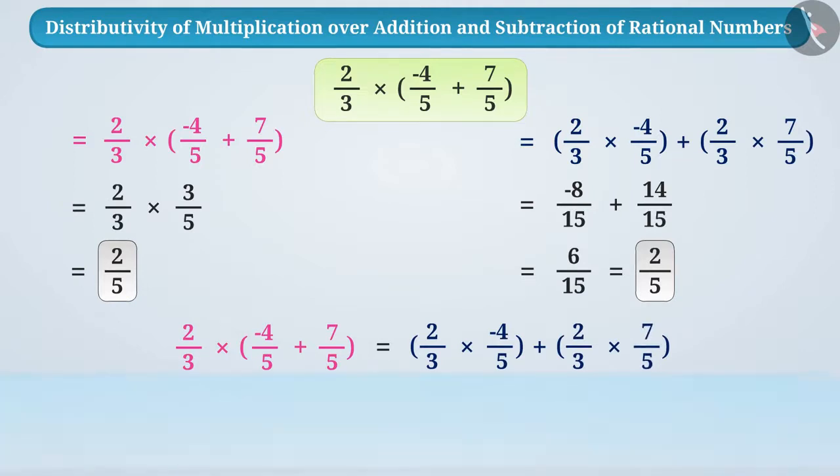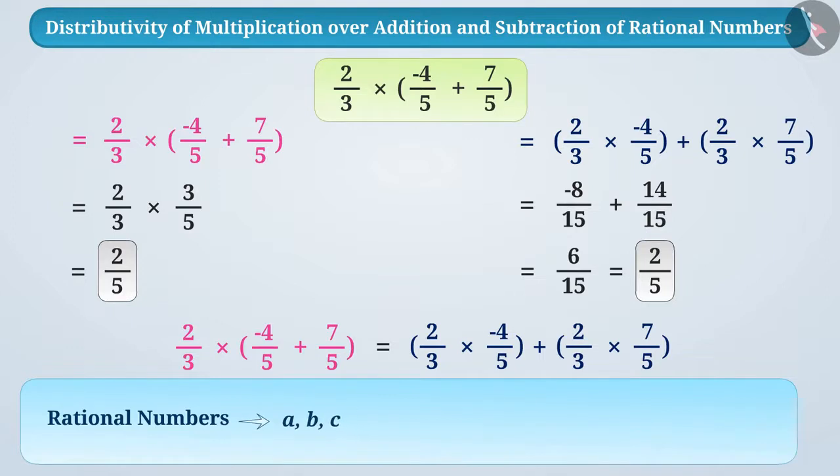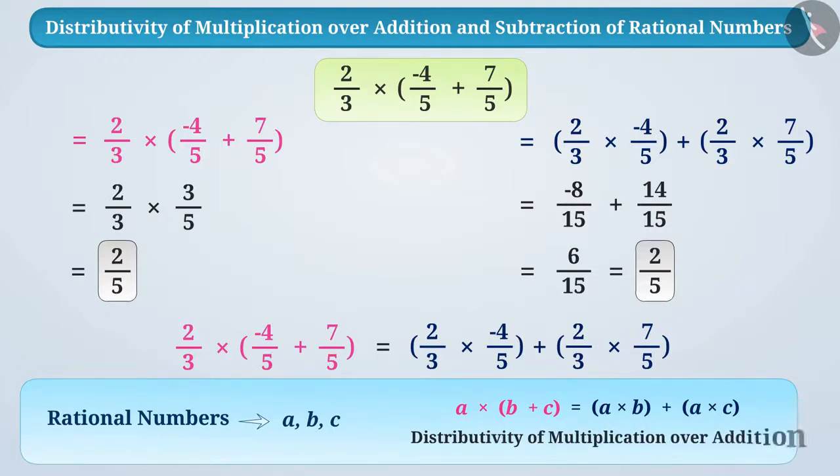In general, for any three rational numbers a, b, c, a multiplied by b plus c is equal to a multiplied by b plus a multiplied by c. This is called distributivity of multiplication over addition.